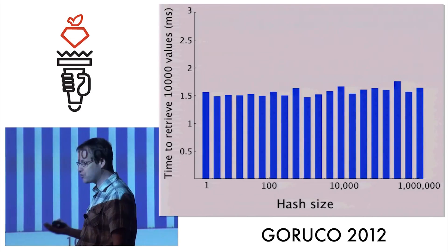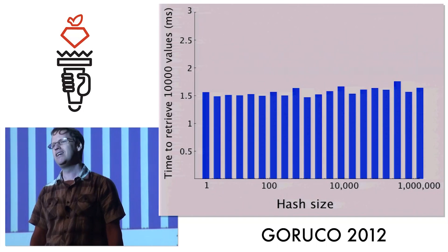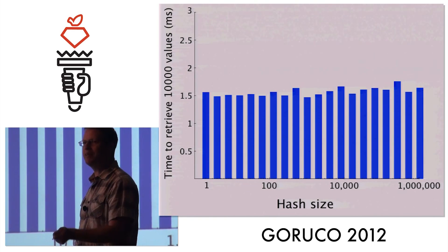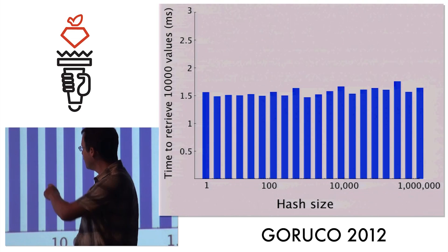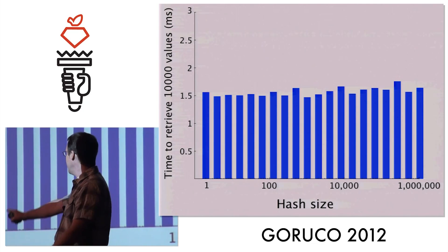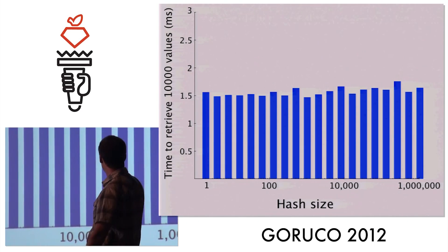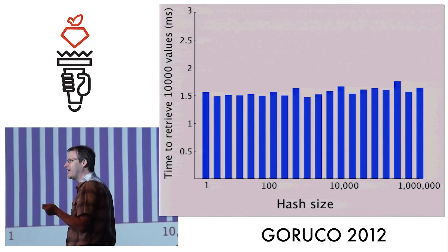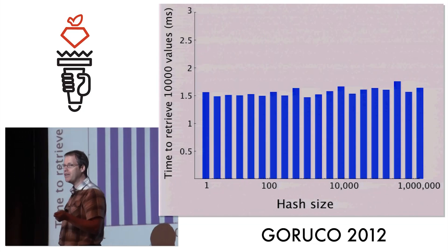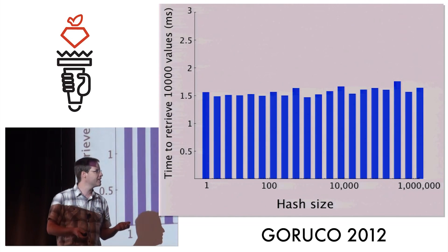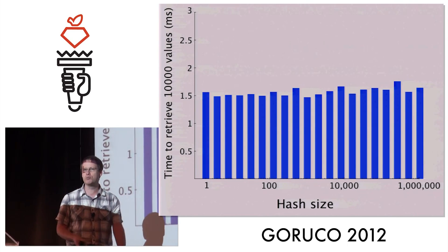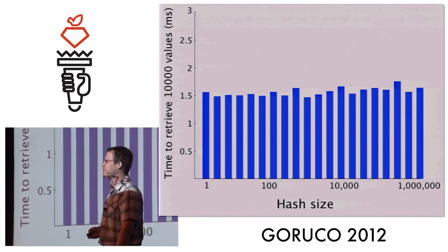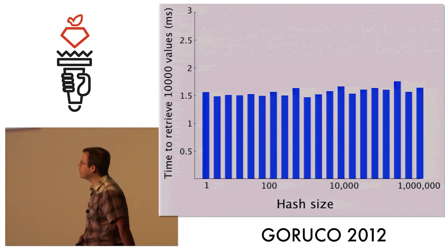The coolest thing about hashes I discovered recently was how fast they are. If you actually measure how long it takes to get an element out of a hash, it's amazing. On the left I have a hash of size 1, then measuring up to 100, 10,000, up to a million elements. It took just microseconds to get an element out of a hash, no matter which element I looked for. It's like a mini-search engine built into the Ruby language. How does Ruby do this?